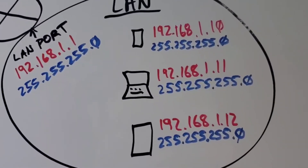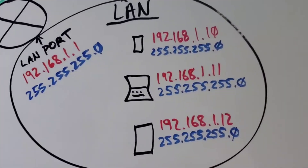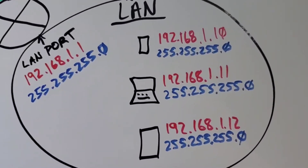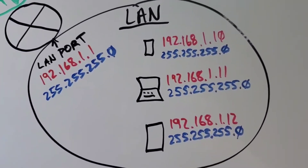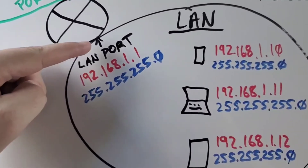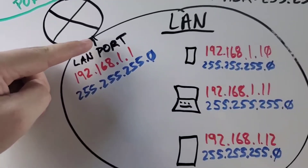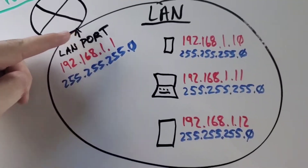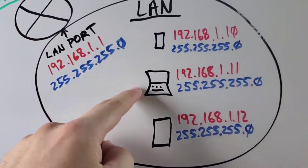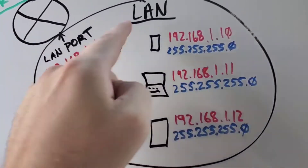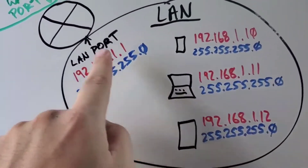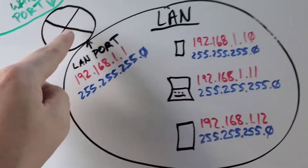So what about the default gateway? What the default gateway is, is the IP address of your router — and actually it's the way for your network devices to get outside of your network.